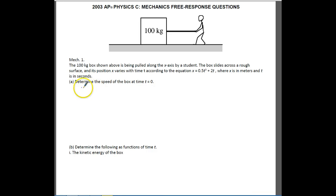Hey AP Physics C, this is Horner and this is the 2003 AP Physics C mechanic question number one. You have a hundred kilogram box that is being pulled along the x-axis by a student. The box slides across a rough surface, so there's got to be some friction here. We'll deal with that the very last part of the problem. Its position x varies with time according to the equation that you see here, where x is in meters and t is in seconds. They want us first to determine the speed of the box at time t equals zero.